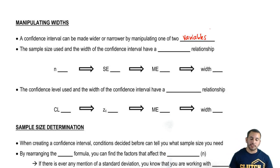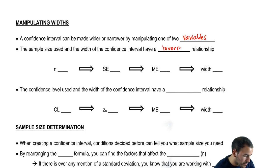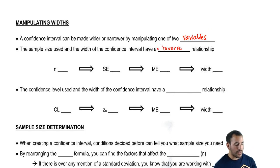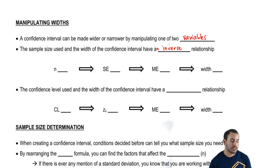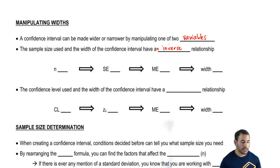The sample size used and the width of the confidence interval have an inverse relationship. What that basically tells you is that as one goes up, the other one goes down — that's why they're inverse.